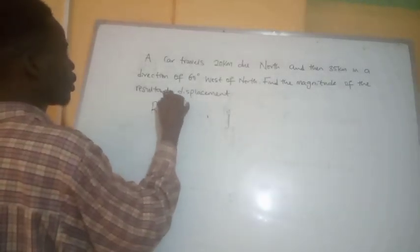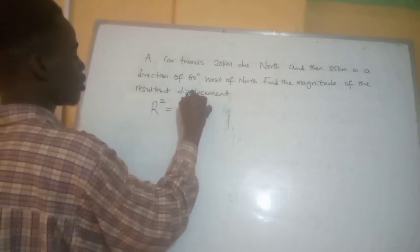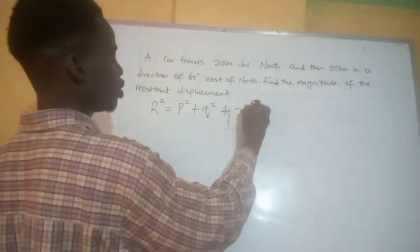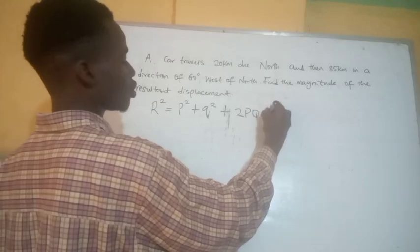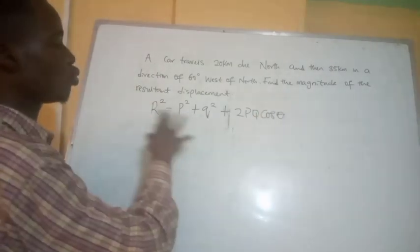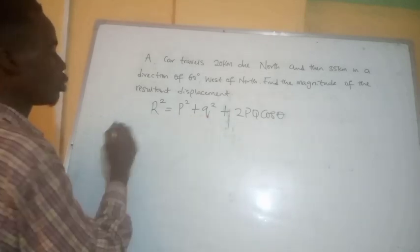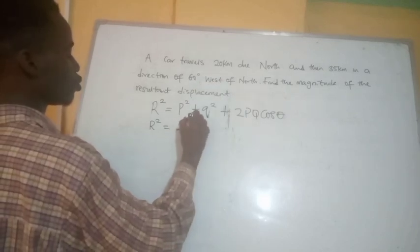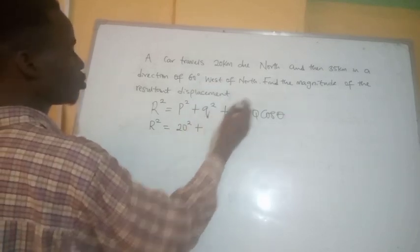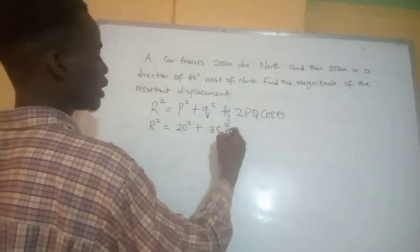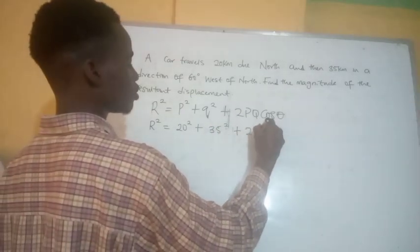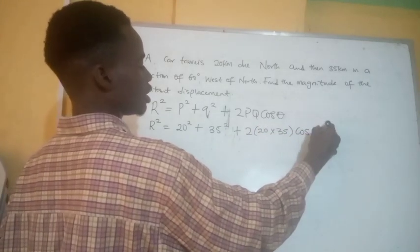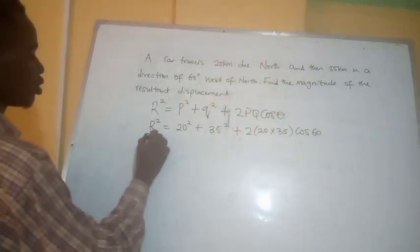The formula goes like this: the resultant squared is equal to P squared plus Q squared plus 2PQ cos θ. You can use A and B or any variable you prefer. Now substituting: our resultant squared equals P = 20 squared plus Q = 35 squared plus 2 times 20 times 35 times cos 60.